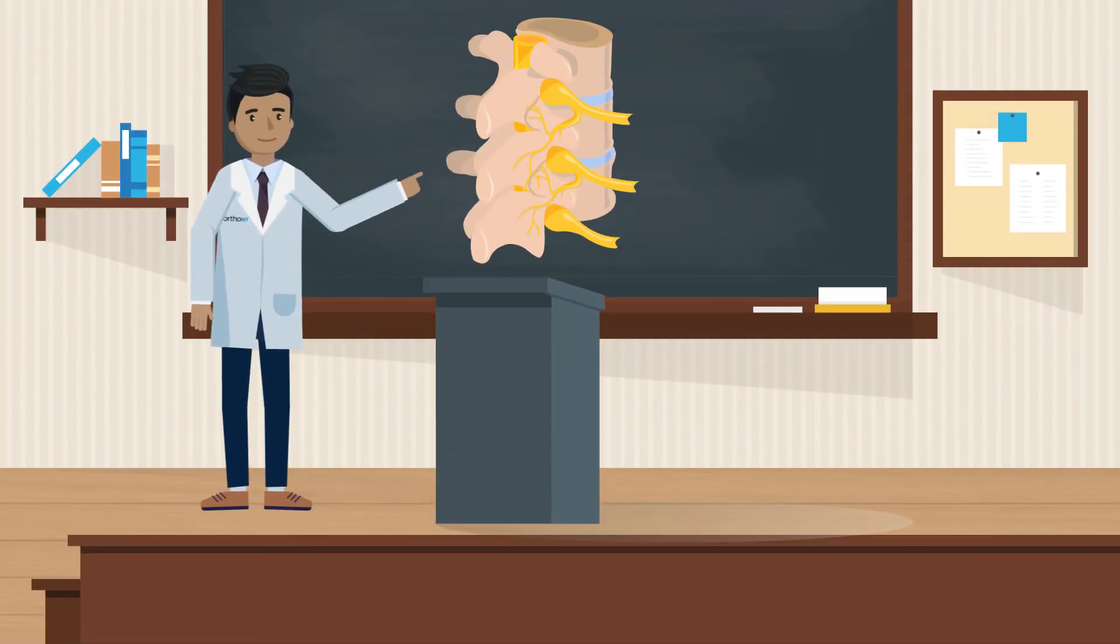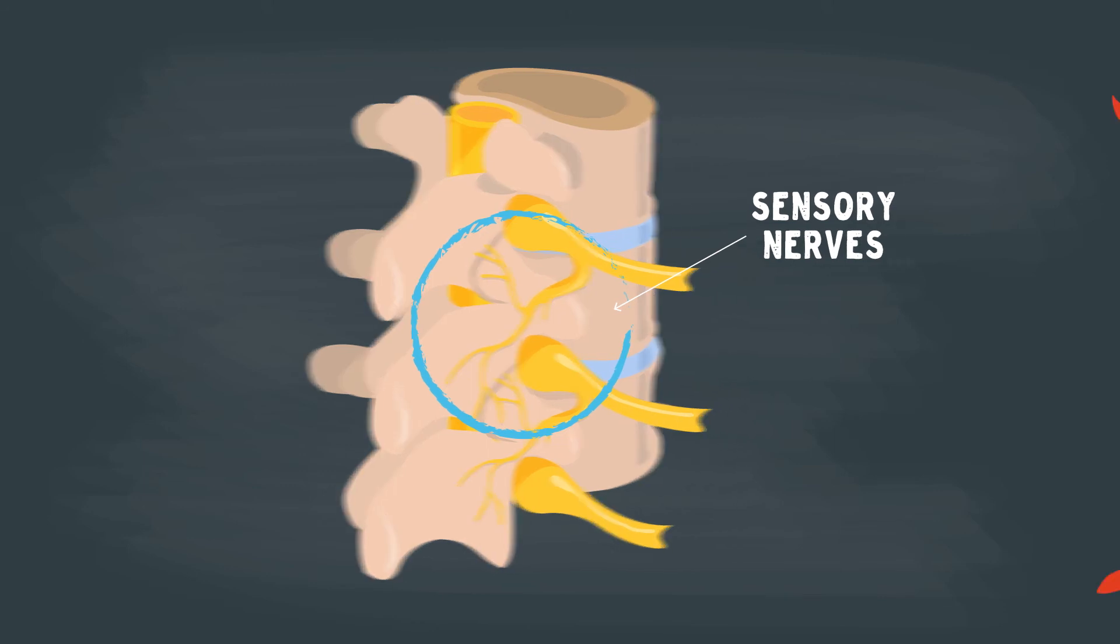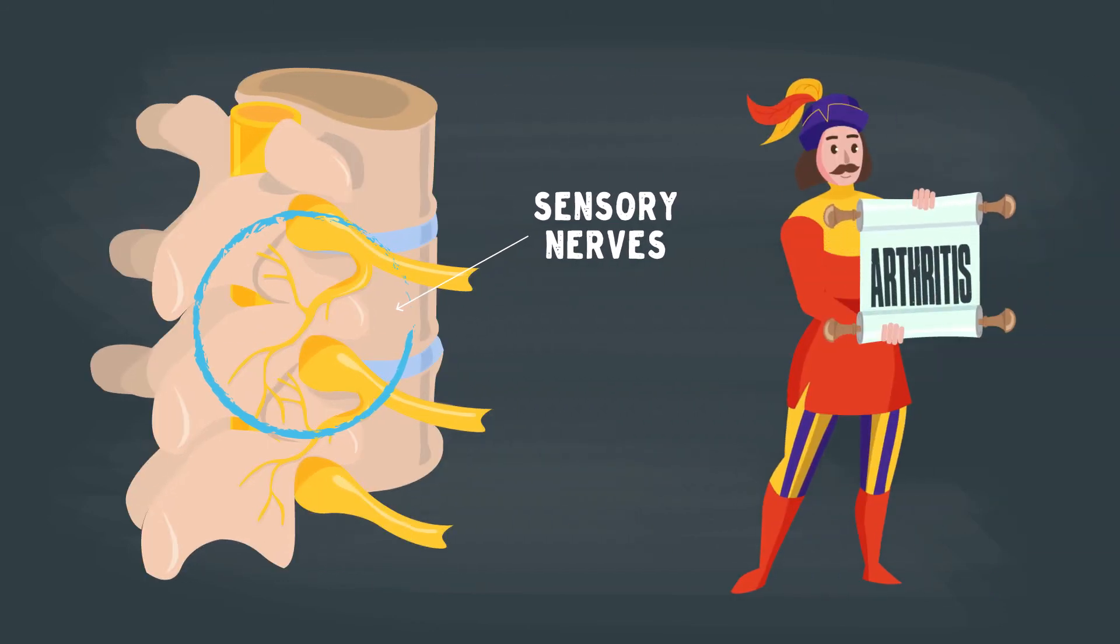Here's where things get really interesting. There are a group of small nerves that are only responsible for telling you what's going on in the facet joints. They're what we call sensory nerves. They are messengers that have no functional use other than to tell you about your arthritis.